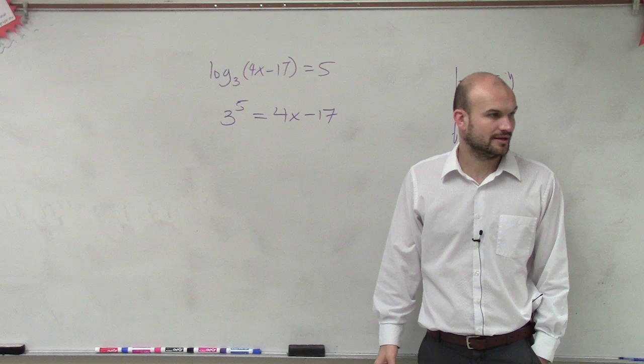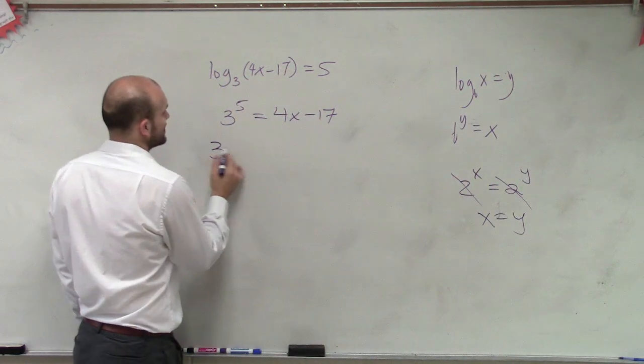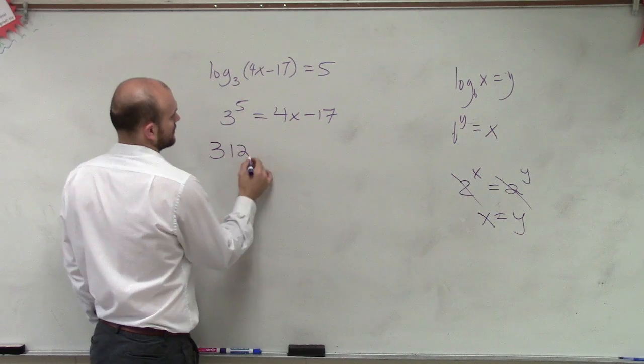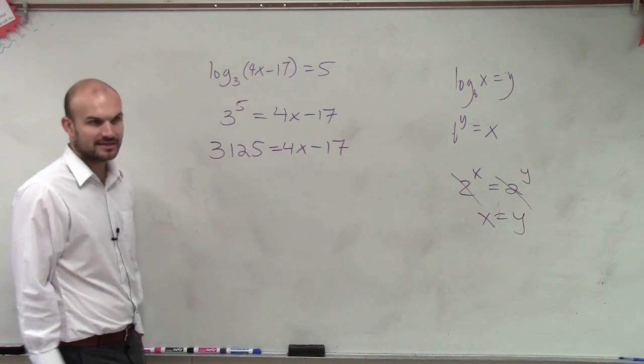So, somebody has a calculator. You're the man. 243 equals 4x minus 17. Now, can I solve a problem like this?